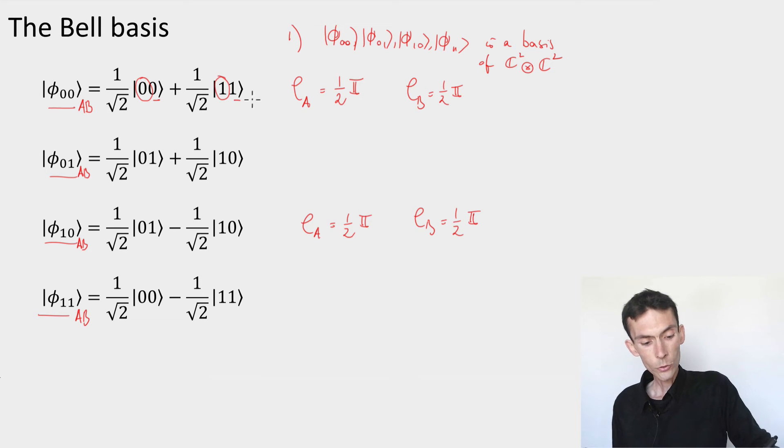For instance, if we're interested in going from the first state to the second state by acting only on the B system, there should be a way to do this, because their reduced densities on A are the same. What's the way to do it here? We could apply a unitary UB, which exchanges 0 and 1. So maps 0 to 1, and 1 to 0.